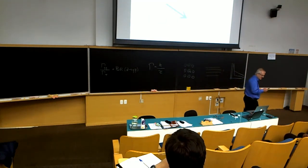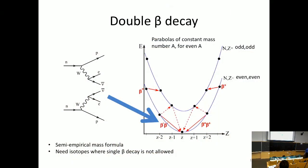Double beta decay. Everybody knows what beta decay is — that is what we need the neutrino for originally. Double beta decay is two beta decays, however it is not one beta decay after the other beta decay. That's just two single beta decays. Double beta decay is a single process, a single amplitude, a single Feynman diagram if you want. There's nothing drawn in between here, but this is one process.